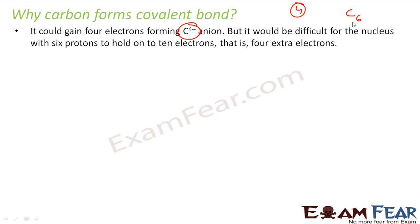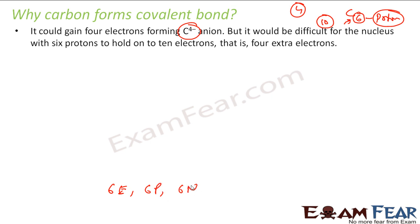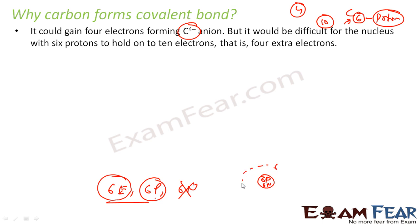If you see carbon, the atomic number is six. That means there are six protons. Carbon cannot hold ten electrons because it already has six electrons. The configuration of carbon shows six electrons, six protons, and six neutrons. This nucleus has six protons, and carbon by default has two electrons in the first shell and four in the next shell.